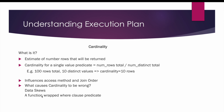As discussed, cardinality is the estimated number of rows returned out of each operation. If we want to calculate the cardinality of a single column, the formula is: cardinality = total number of rows divided by total number of distinct values. For example, if a table has 100 rows and 10 distinct values, the cardinality is 100 / 10 = 10. Cardinality is very important because it influences the access method and join orders.